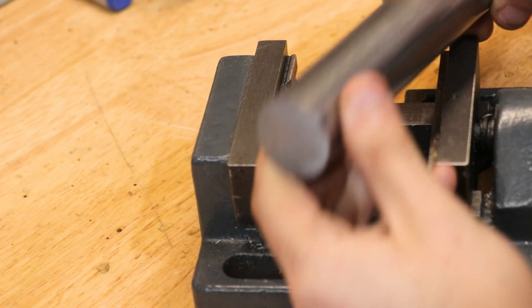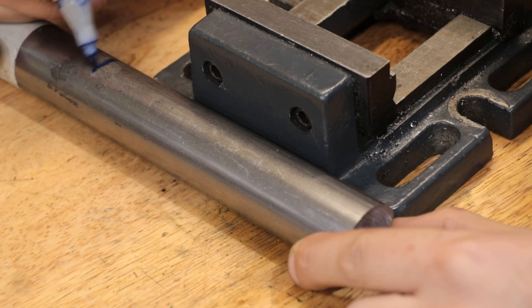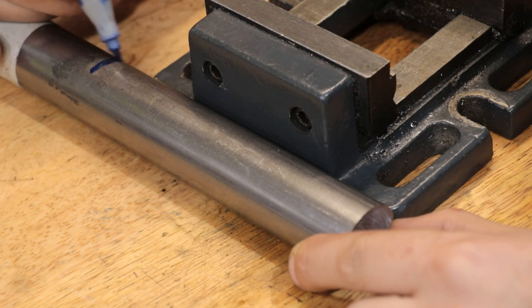As well as the vice, I'm gonna need a chunk of some cold drawn steel, and a piece which is about the same width as the vice should do well.